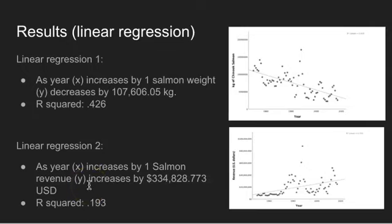The second linear regression: as year (X) increases by 1, salmon revenue (Y) increases by 334,828.773 U.S. dollars. And the R squared for this one would be 0.193, which equates to 19.3 percent.